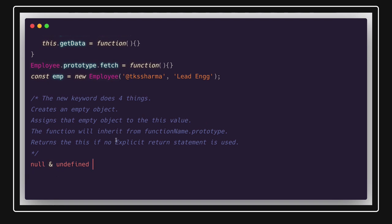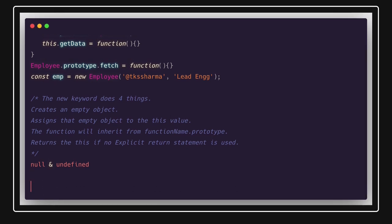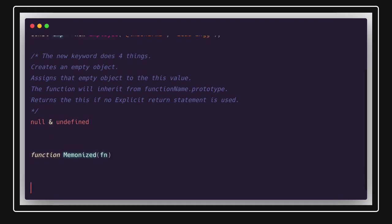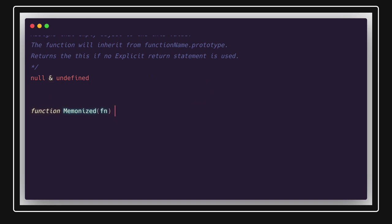In interviews they might ask you to write a memoize function, which tests your knowledge of closures and currying. So let's write a simple memoize function — `function memoize(fn)`. It takes a function as an argument. The idea is: if you're calling the same function with the same argument, it should return the value from cache rather than recomputing.